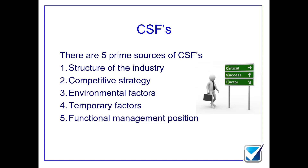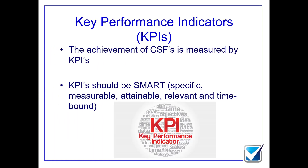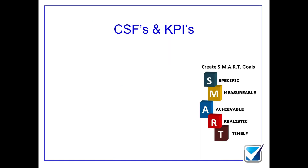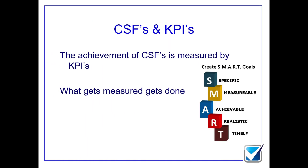These critical success factors are all well and good, but how do we know whether or not we're achieving them? We determine this by looking at key performance indicators. A KPI shows whether or not I'm achieving a CSF. The KPIs have got to be SMART because these are targets, so they need to be specific, measurable, attainable, relevant, and time-bound. The KPIs show whether or not I'm achieving my CSFs — they allow me to measure performance to see whether or not I'm hitting my CSFs.